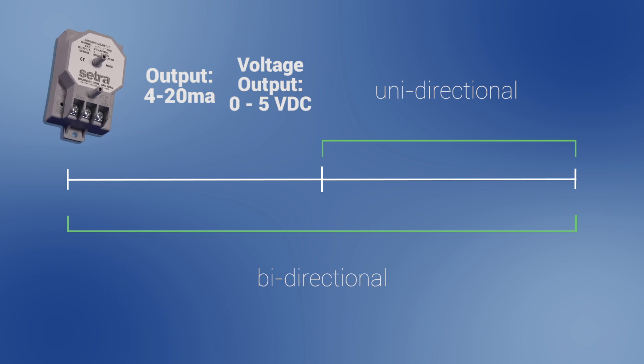The pressure transducer gives a linear and proportional output as pressure is applied. For example, a unidirectional pressure range of 0 to 10 inches of water column with a 4 to 20 milliamp output would output 4 milliamps at 0 pressure, 12 milliamps at 5 inches of water column, and 20 milliamps at 10 inches of water column.